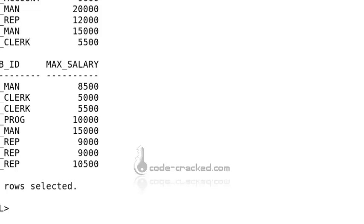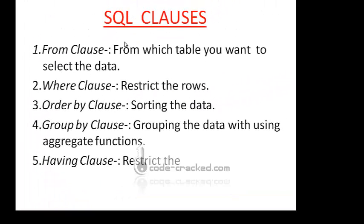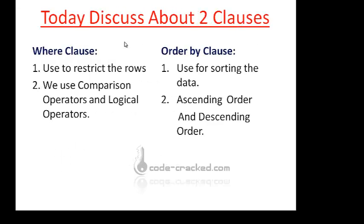Now we'll discuss SQL clauses. The FROM clause specifies which table to select data from. The WHERE clause restricts rows. ORDER BY sorts data in ascending or descending order. GROUP BY groups data using aggregate functions like MIN, MAX, SUM, COUNT. The HAVING clause restricts grouped results.